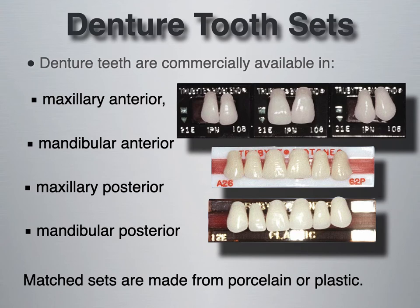Most commonly, denture teeth come in sets — a maxillary anterior set, a mandibular anterior set, a maxillary posterior set, and a mandibular posterior set. These matched sets are made from porcelain or plastic.